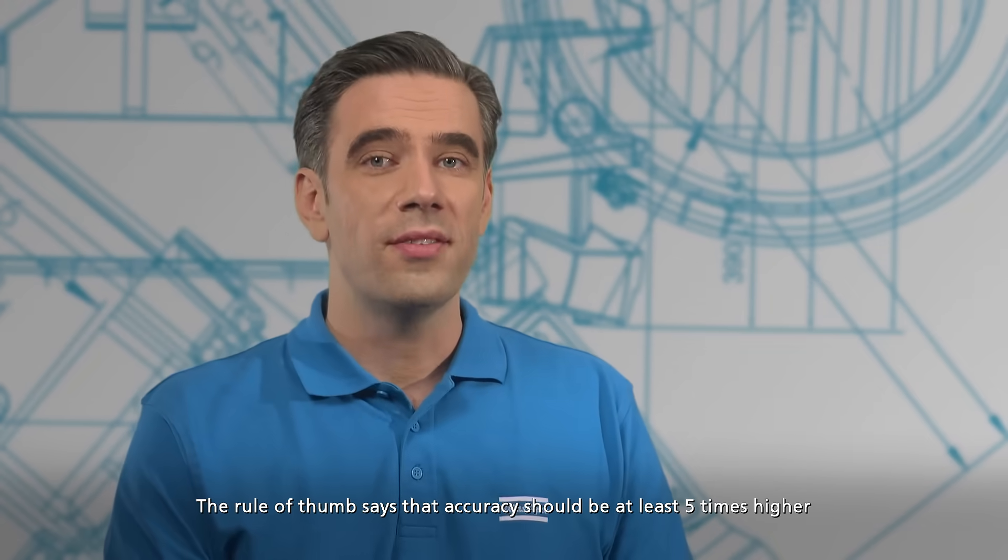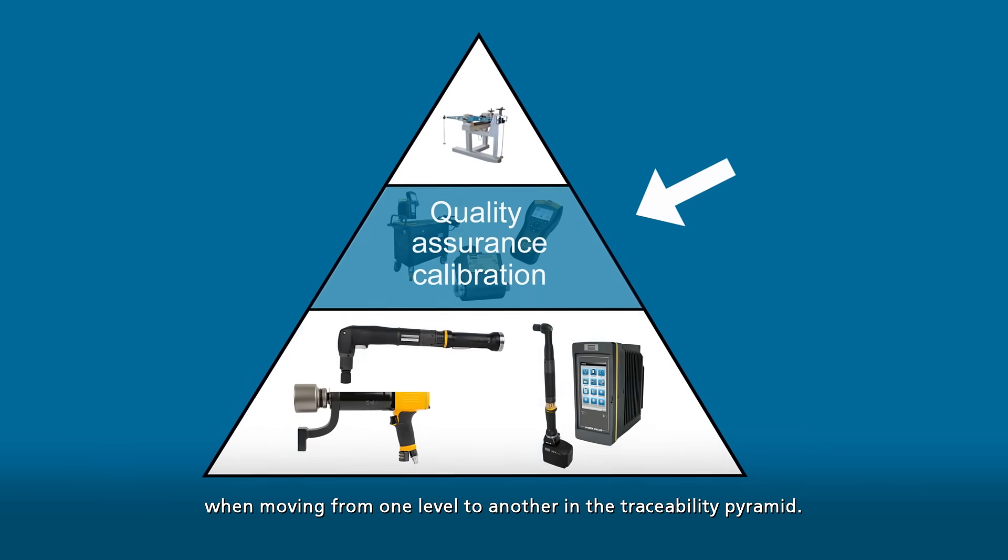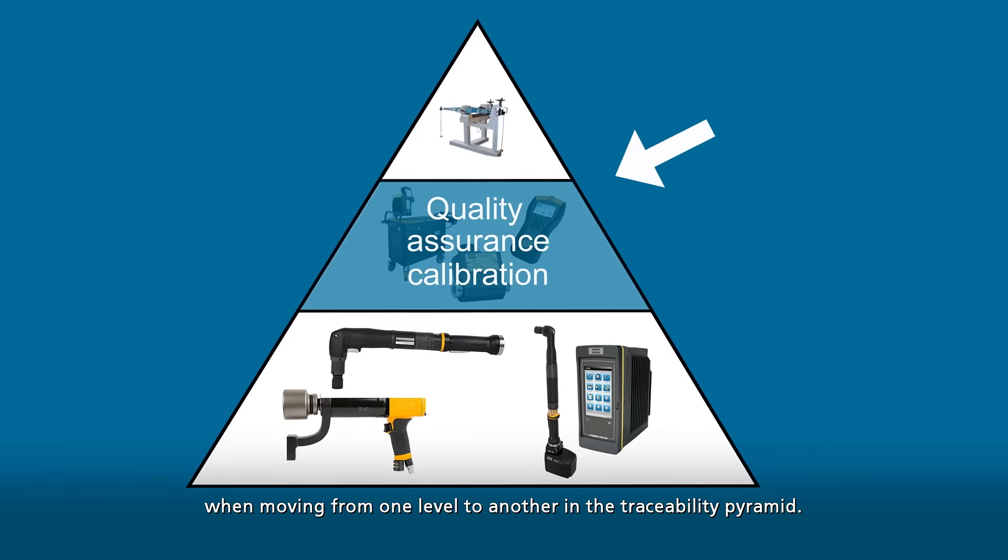The rule of thumb says that accuracy should be at least 5 times higher when moving from one level to another in the traceability pyramid.